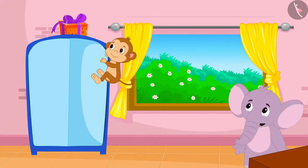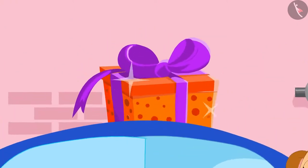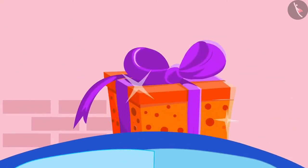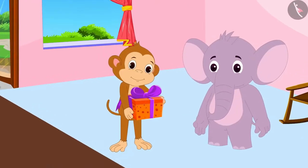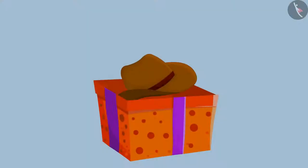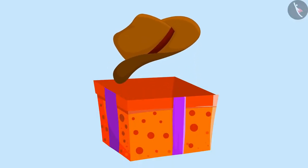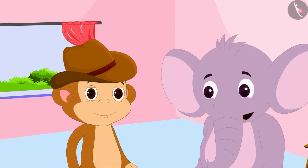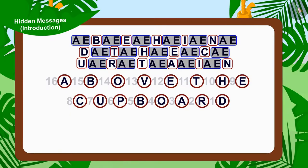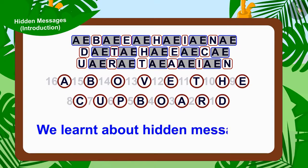When Baban quickly jumped on top of his cupboard, he saw that there was a gift wrapped in a shiny paper there. Appu had actually hidden a cap as a gift for him. Baban was very happy to get his new cap. Children, in this video, we learned about hidden messages. In the next video, we will see some more interesting examples related to this.